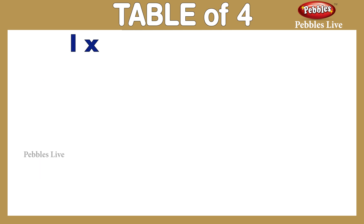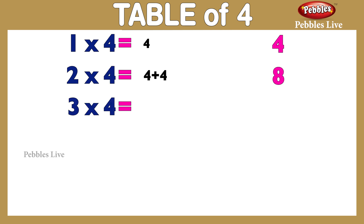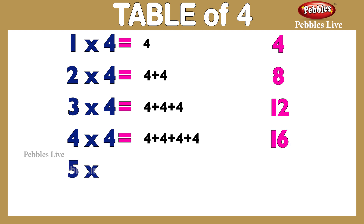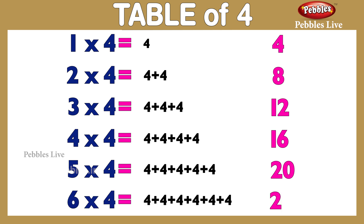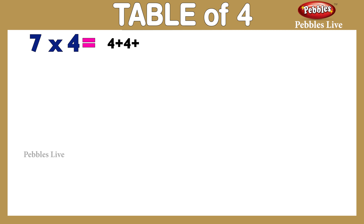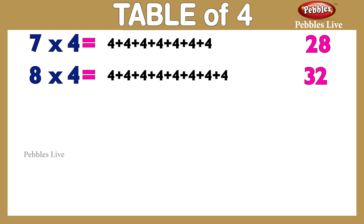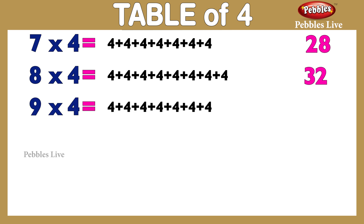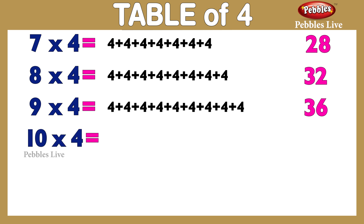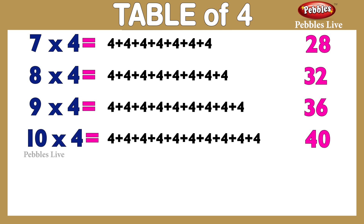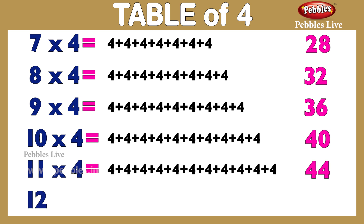Table of 4: 1 four is 4, 2 fours are 8, 3 fours are 12, 4 fours are 16, 5 fours are 20, 6 fours are 24, 7 fours are 28, 8 fours are 32, 9 fours are 36, 10 fours are 40, 11 fours are 44, 12 fours are 48.